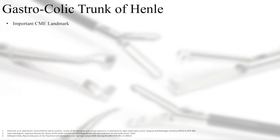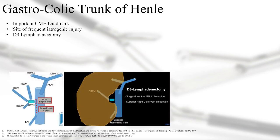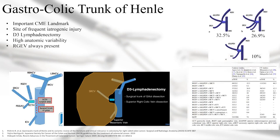The gastrocolic trunk is an important CME landmark for two reasons. The first is possible perioperative bleeding, especially during the separation of the mesocolon from the pancreas — it is the second most injured vascular site during CME after the superior mesenteric vein. It has high anatomic variability, with only the right gastroepiploic vein being always present. The lymphoadipose tissue located on the anterolateral aspect of the superior mesenteric vein from the ileocolic vein to the trunk of Henle is called the surgical trunk of Gillo and must be cleared during central lymphadenectomy.